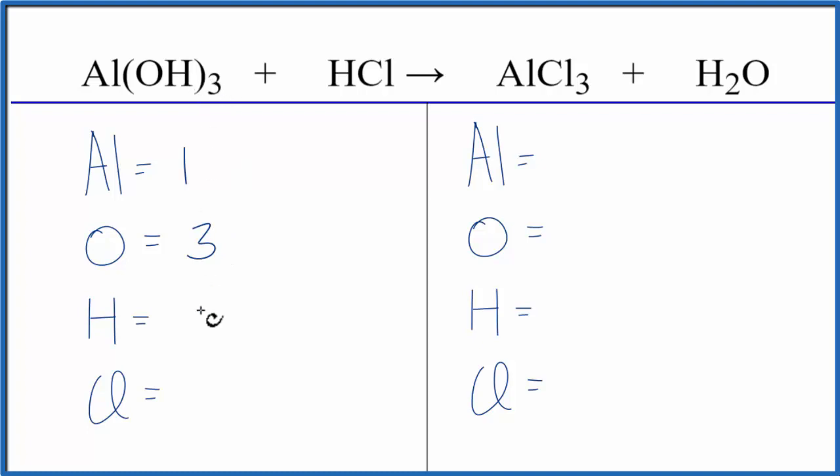Three times the one hydrogen. We have three hydrogens. Plus we have a hydrogen out here, so we have to make sure we count that, four total hydrogens. And then chlorine, we have one.